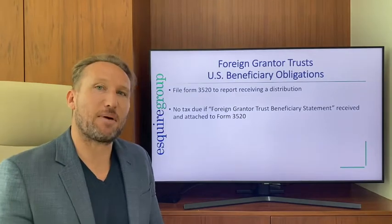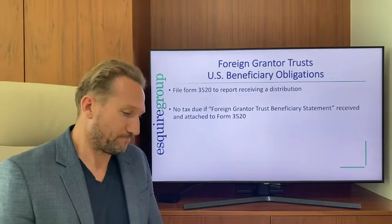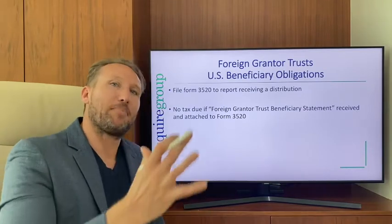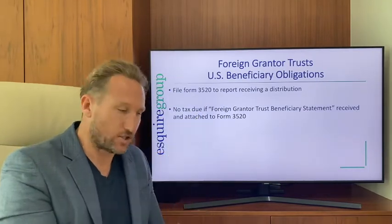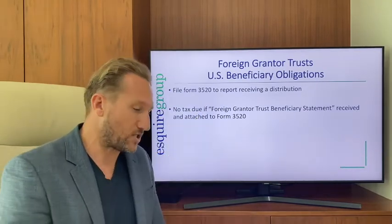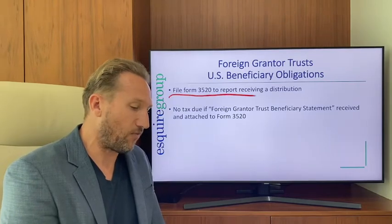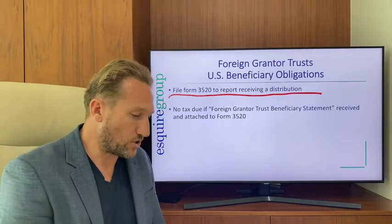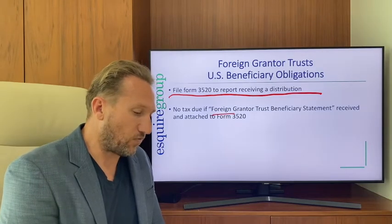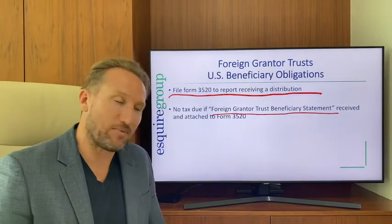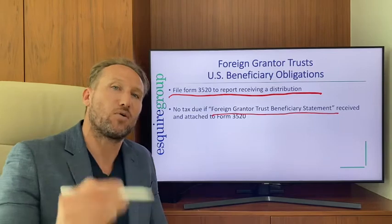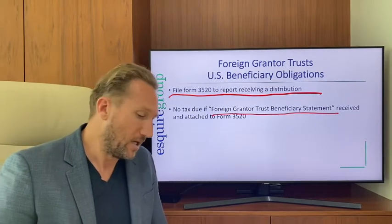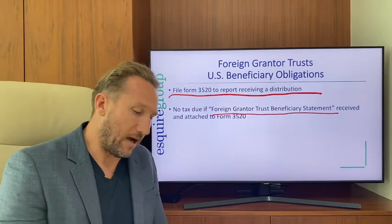Now the beneficiary obligations. For a foreign grantor trust, the beneficiary needs to file Form 3520 if they received a distribution, and attach the foreign grantor trust beneficiary statement to their Form 3520 in order to avoid that distribution being taxable. This is super important.